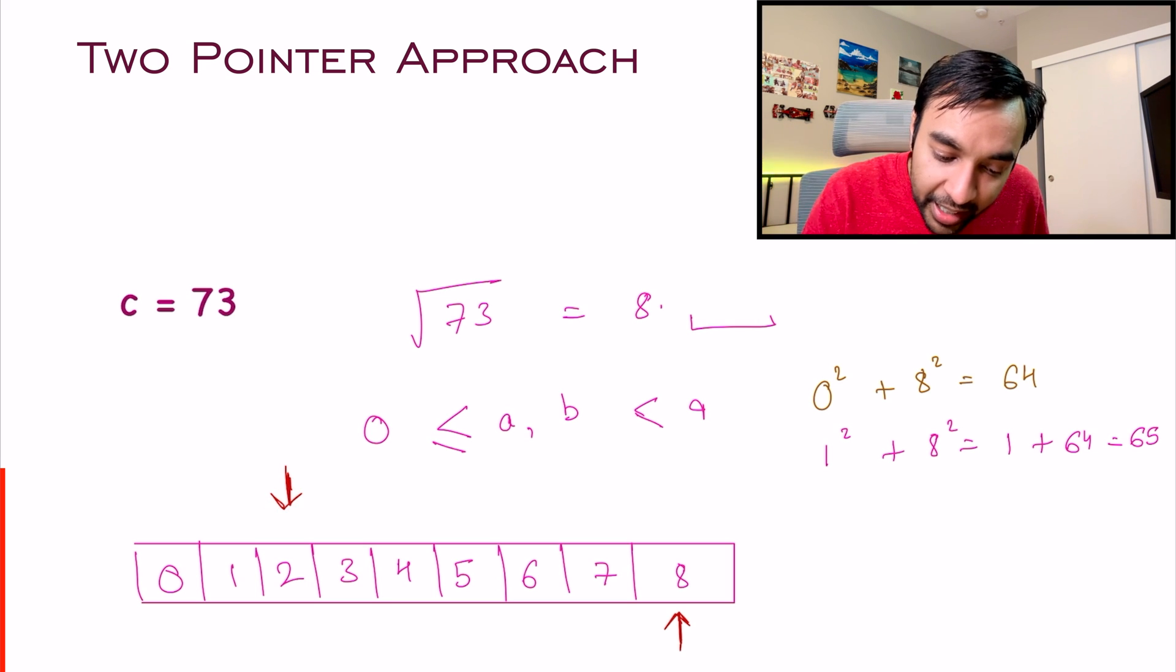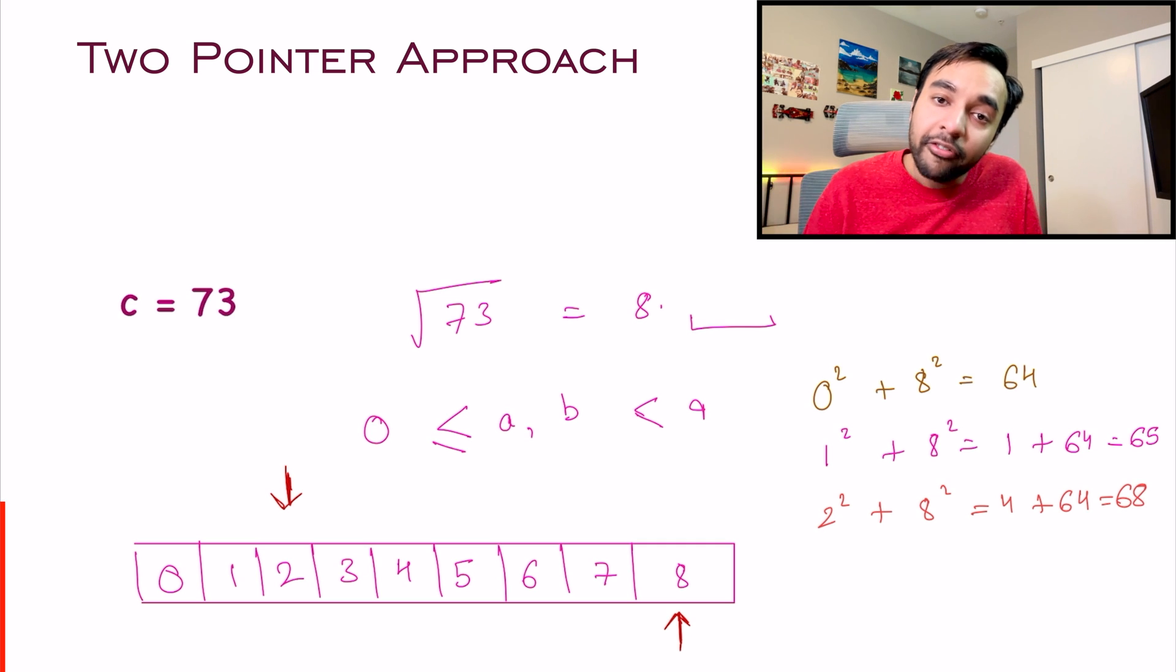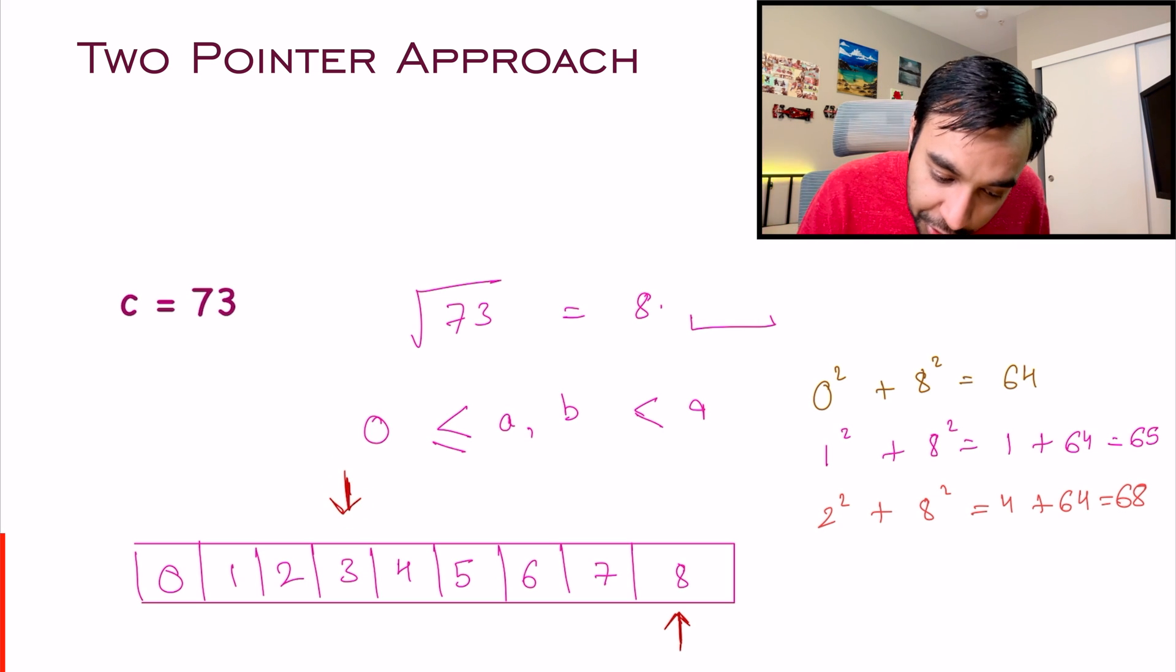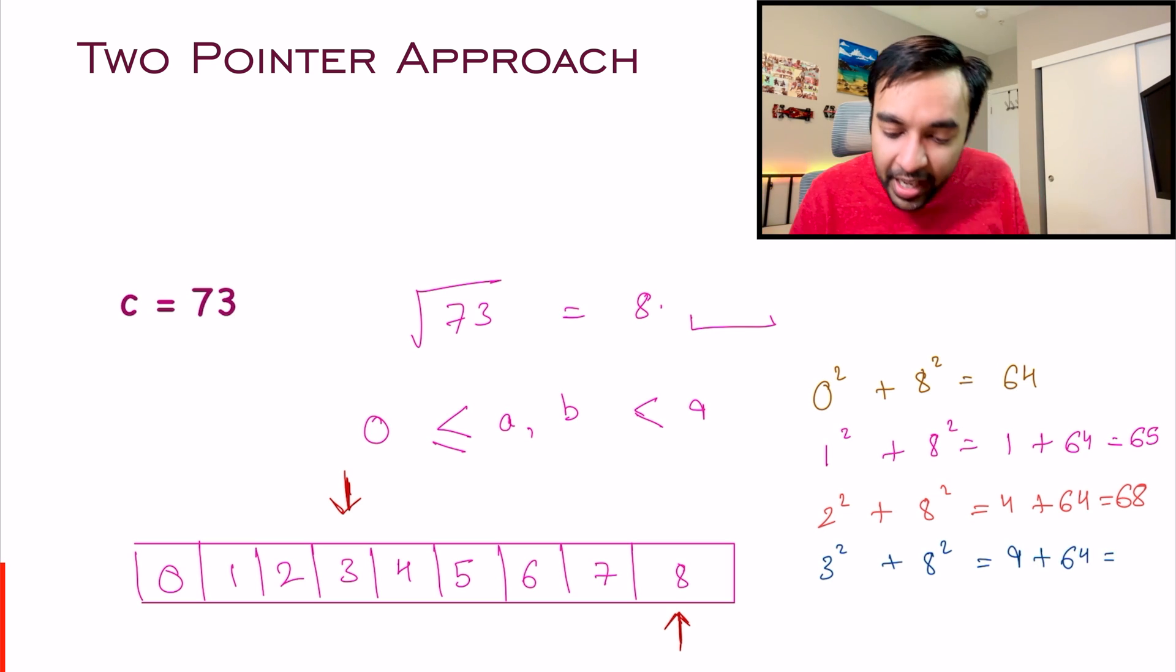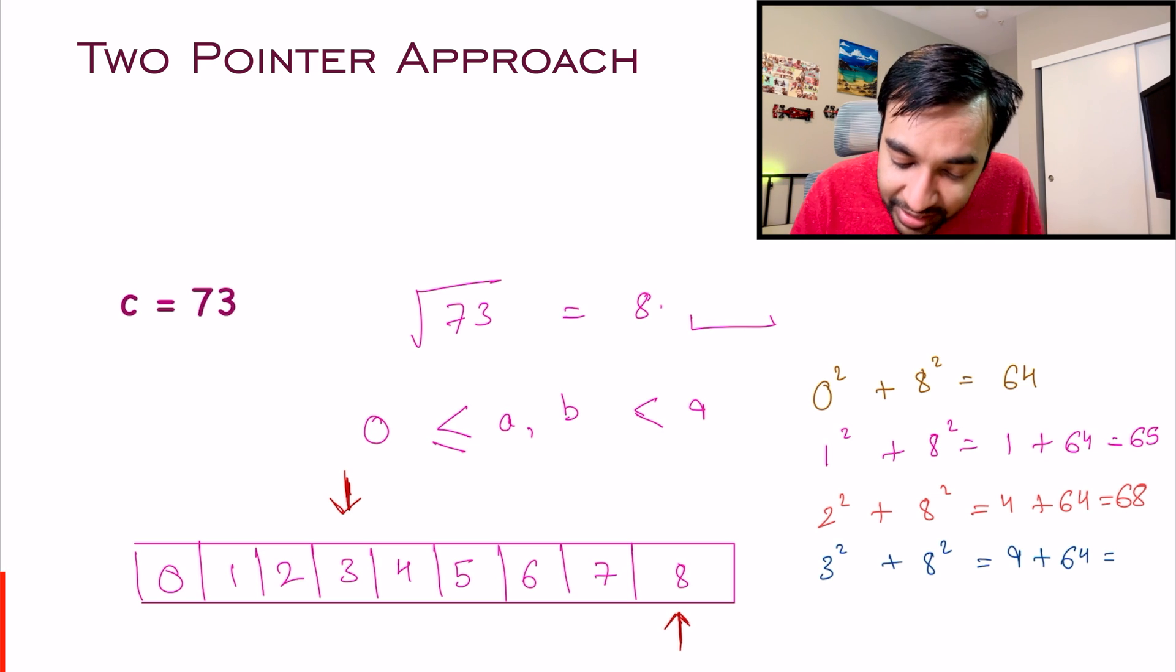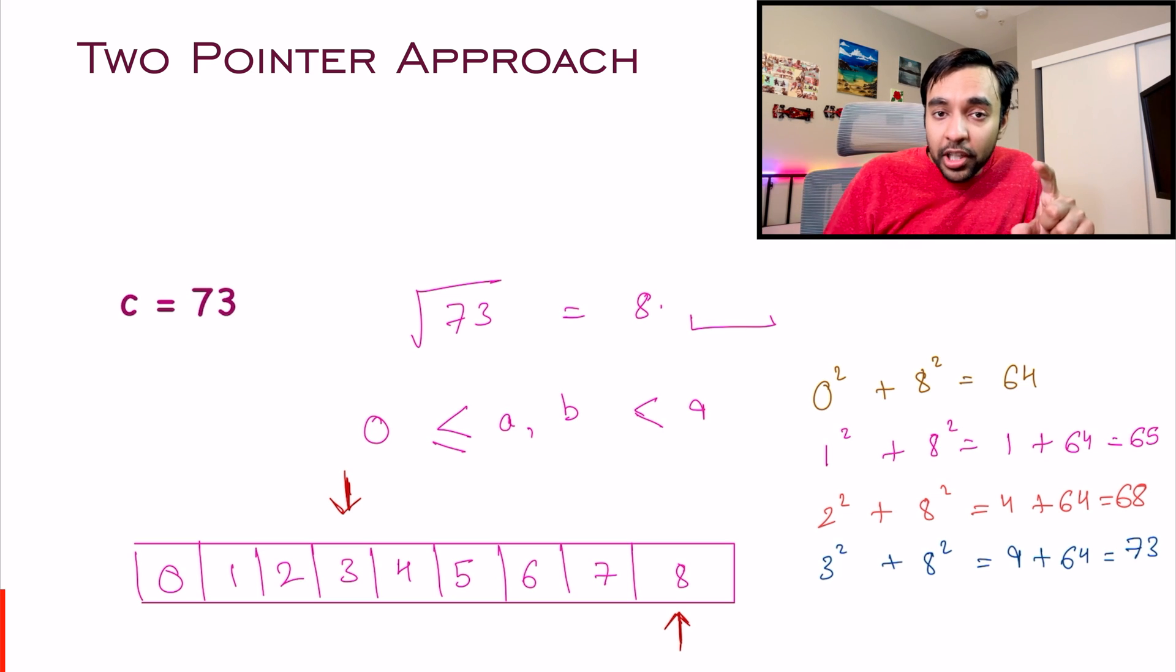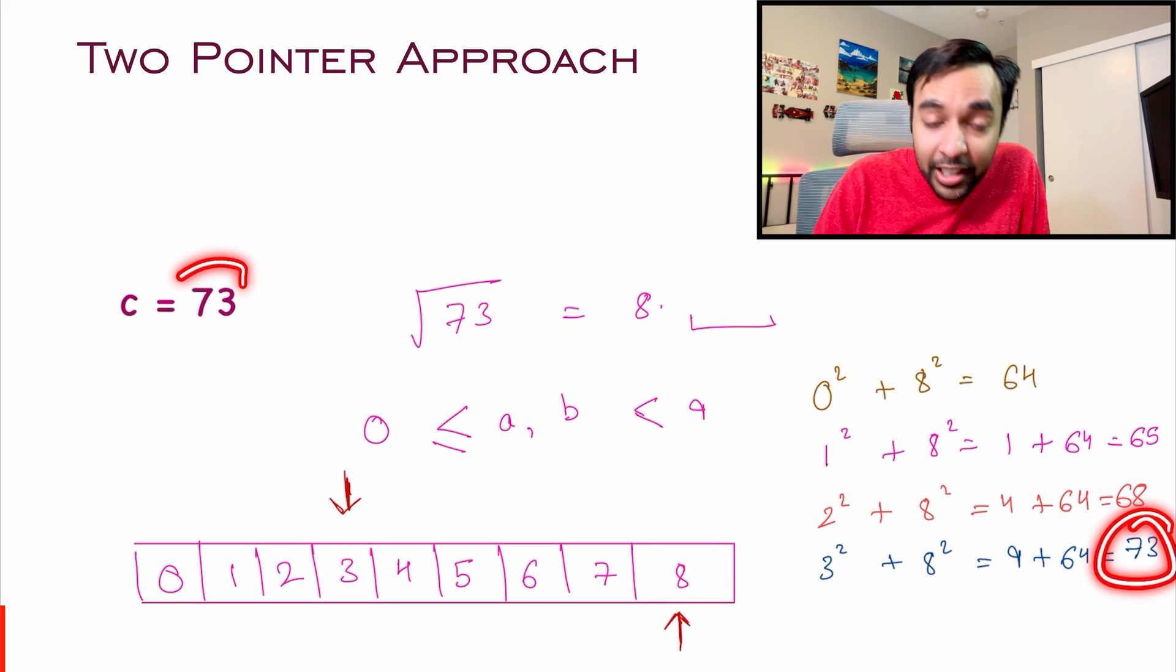And now, where do I land at? I land at 2² + 8². That is 4 + 64, which is 68. Once again, 68 is smaller than 73. So I increment my pointer. Just wait this while and you will understand everything. So now, what I will do? I will do 3² + 8². So this time, I get 9 + 64. And if you add them both, this time, you will end up getting 73. So you were able to determine that yes, if I have these two integers, then I can get this value 73.